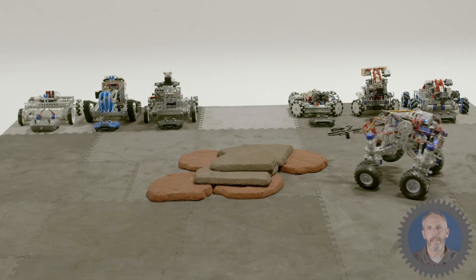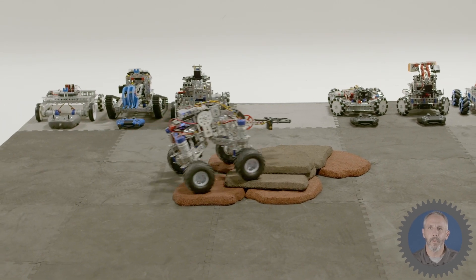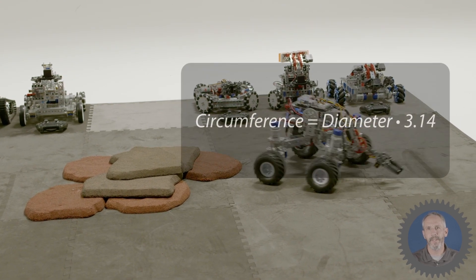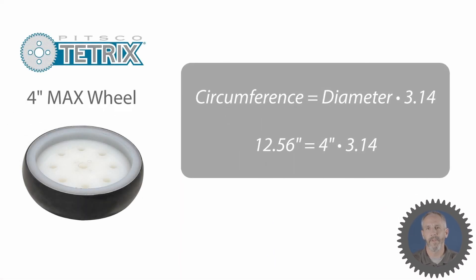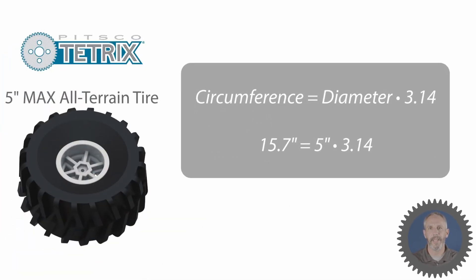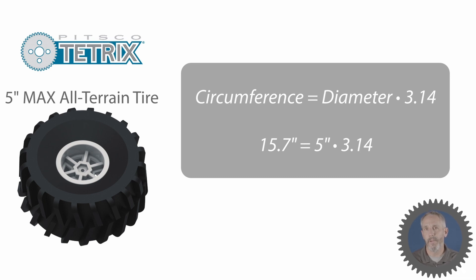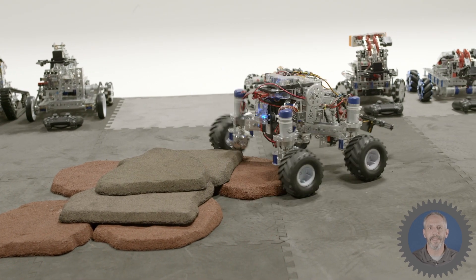The TETRIX all-terrain tires are slightly larger than the standard TETRIX four-inch wheels. Larger wheels equate to more speed. The circumference of a circle equals diameter times pi, so the circumference of a four-inch wheel is 4 × 3.14 = 12.56 inches — meaning each motor rotation travels 12.56 inches. The all-terrain tires have a five-inch diameter: 5 × 3.14 = 15.7 inches per rotation. That's a 25% increase in distance and, assuming the same motor speed, a 25% increase in speed.